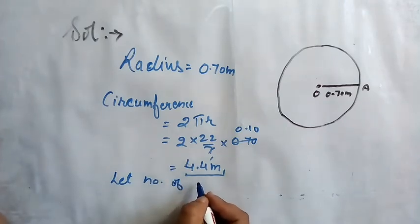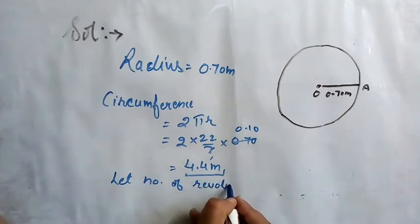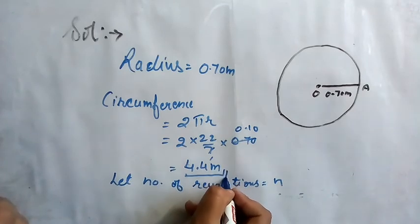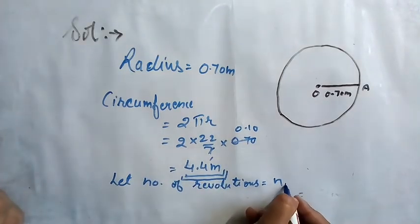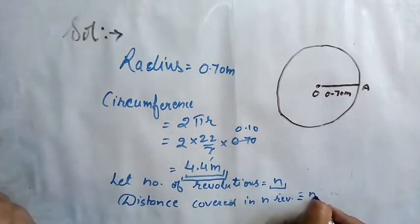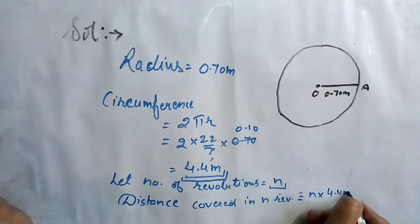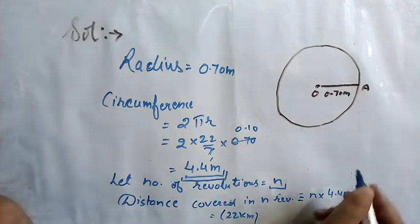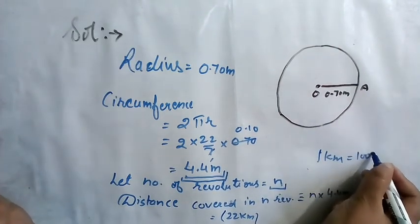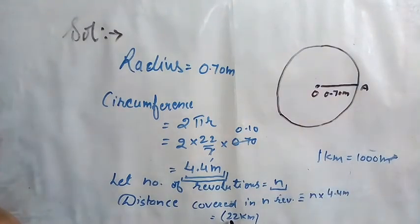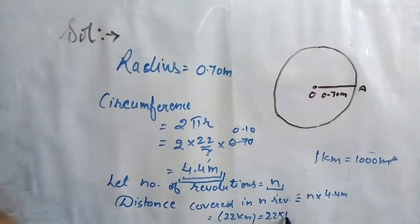Let us suppose it takes n revolutions to cover 22 kilometers. The distance covered in n revolutions will be n × 4.4. This distance equals 22 kilometers, but our circumference is in meters, so we convert: 1 kilometer equals 1000 meters, therefore 22 kilometers equals 22,000 meters.